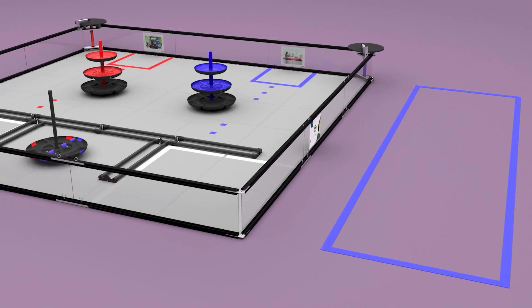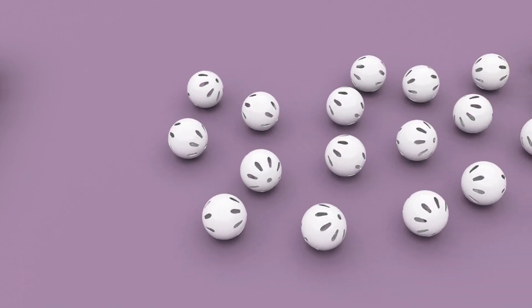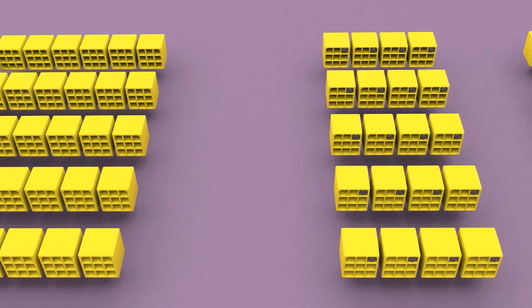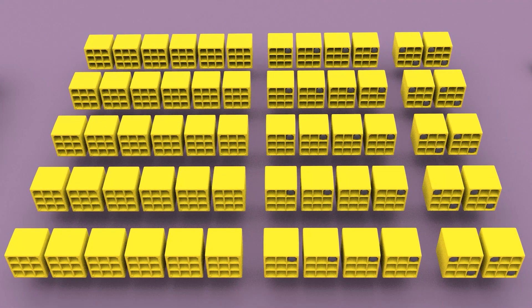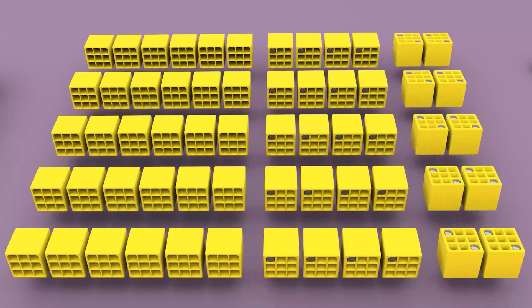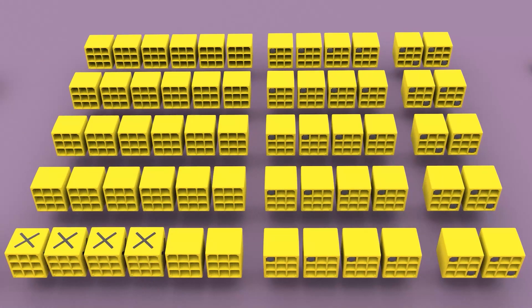Outside of the field walls are the red and blue alliance stations. There are two types of freight: 20 pieces of cargo, 2.7 inches in diameter, and 2-inch square boxes in various weights - 30 lightweight, 20 medium, and 10 heavy boxes. Four of the lightweight boxes are marked with an X.